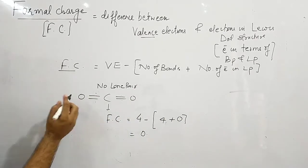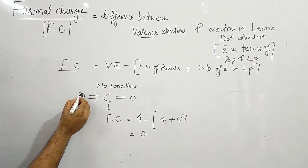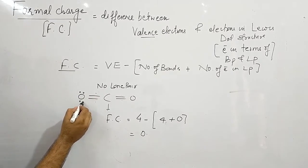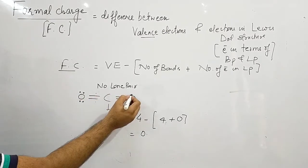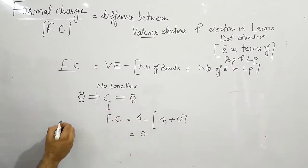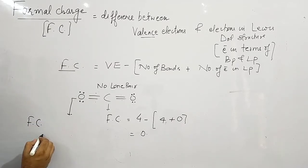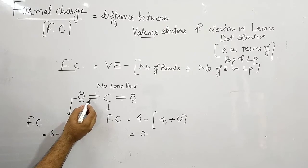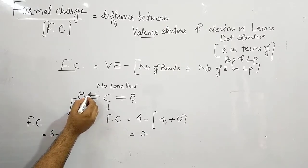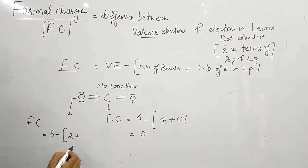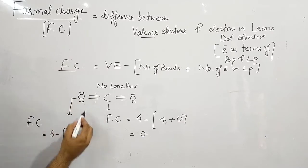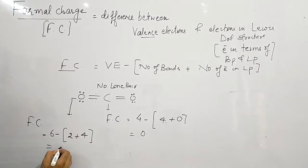Now we will calculate on this oxygen. On this oxygen we are having 4 electrons left. So the formal charge on this oxygen: valence electrons in oxygen is 6 minus 2 bonds plus 4 electrons present in the form of lone pairs. So it is again 0.